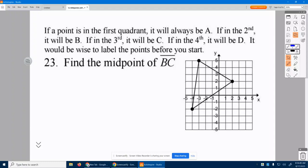Number 23. If a point is in the first quadrant, it will always be A. So we're talking our quadrants. We think of drawing the letter C. Where we start the letter C is first, then second, then third, then fourth. So this is your first, this is your second, this is your third quadrant, and this is your fourth.